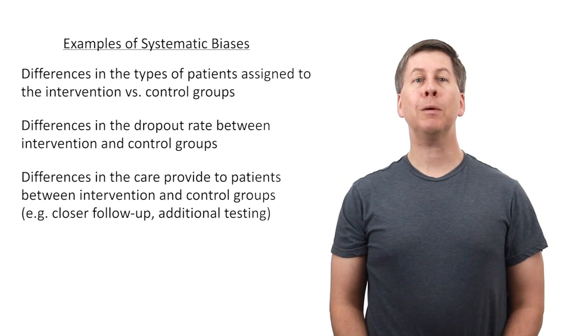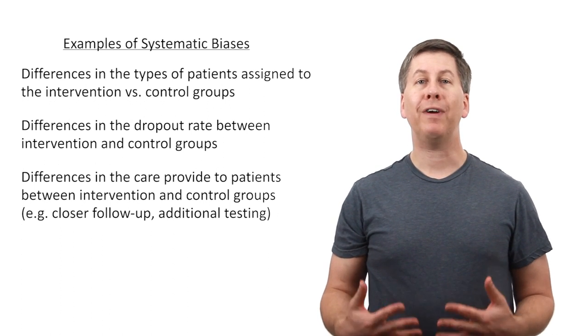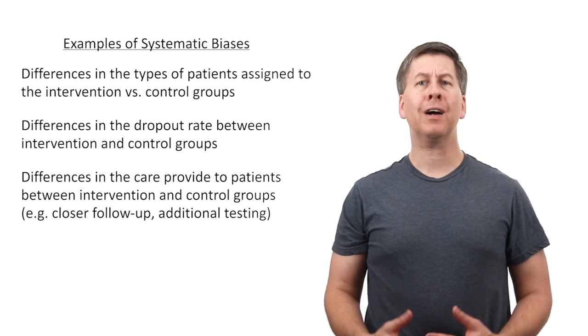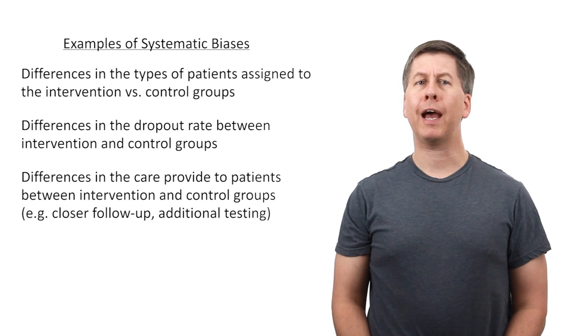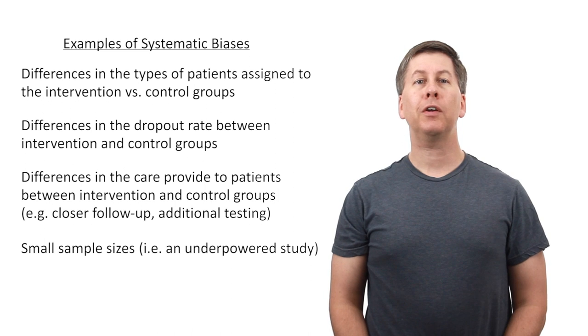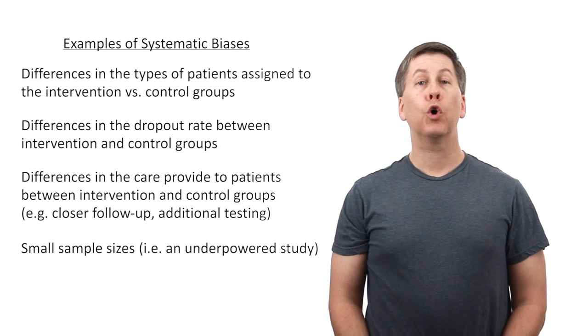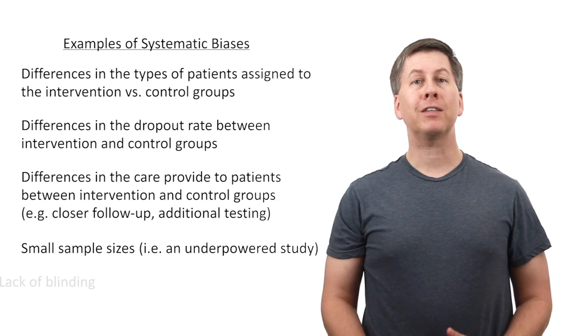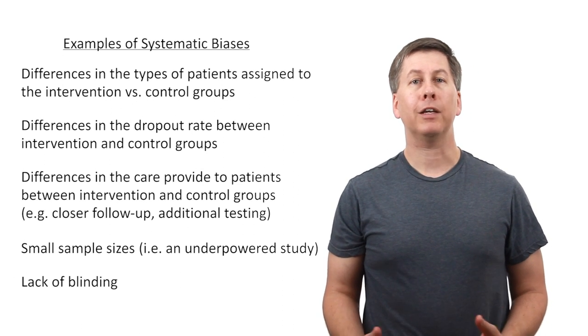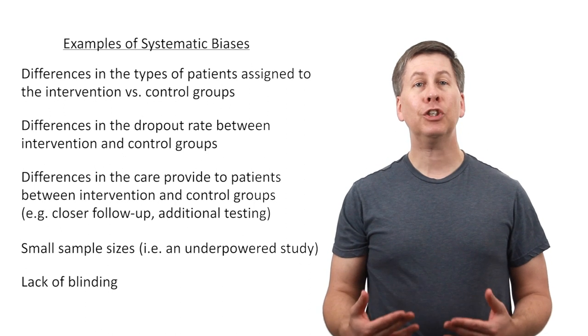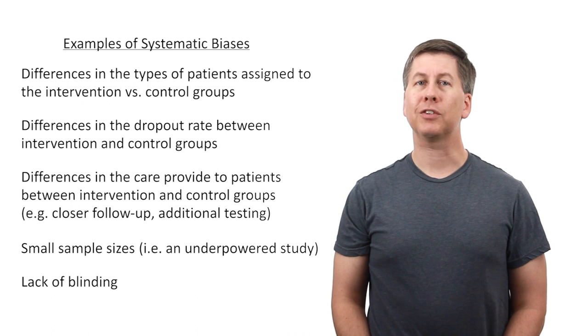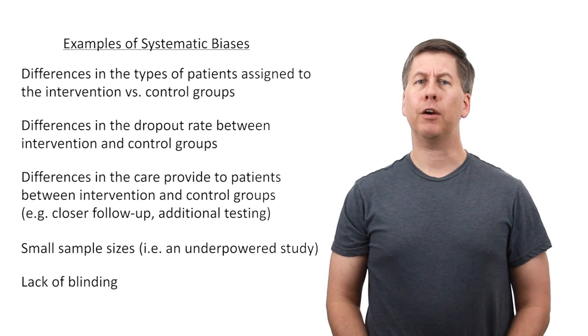Systematic bias can sometimes be a true preventable mistake on the part of investigators, and sometimes it's an unavoidable consequence of the question that's being asked. For example, needing to rely on small sample sizes when studying a rare disease, or being unable to perform a blinded study of a major surgical procedure. And sometimes systematic bias may be introduced intentionally if one is trying to achieve a particular outcome due to a conflict of interest, which I'll be coming back to later on.